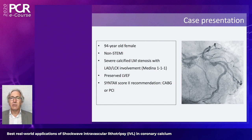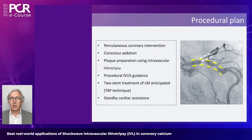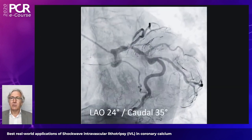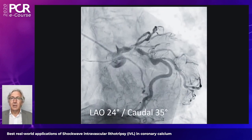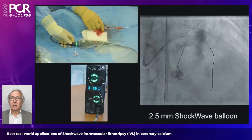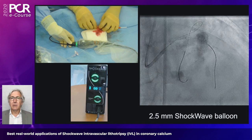The case I'll share is a 94-year-old lady who presented with a non-STEMI and had a severely calcified left main stenosis, Medina 1,1,1, with involvement of the LAD and circumflex coronary artery. She had preserved left ventricular ejection fraction. After heart team discussion, it was agreed to perform percutaneous intervention. We planned a TAP technique, but first it was important to perform in-depth plaque preparation of this heavily calcified vessel, so we opted for IVL.